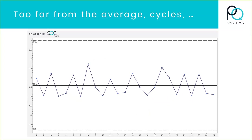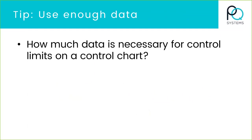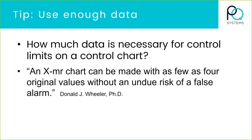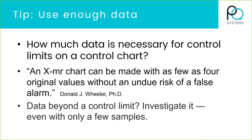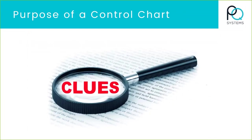Earlier I mentioned you need to have some data — how much? I said 25 or more points, but you can get by with a lot less. Donald Wheeler, who writes a lot for Quality Digest, wrote that you can get by with as few as four original values. What his real point was is that if you don't have 25 data points — let's say you're collecting data monthly and you don't want to wait 25 months before you look at a control chart — make a chart. And if something looks odd or out of control, investigate it even with a small amount of data.